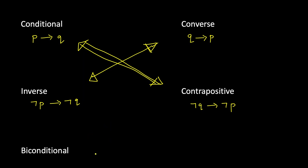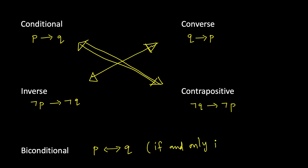Now let's look at biconditional statements. Here P implies Q, and in the converse Q implies P. But in a biconditional, it goes in both directions. You see a double-ended arrow: P if and only if Q. This means P implies Q and Q implies P. It is also abbreviated as 'iff'.